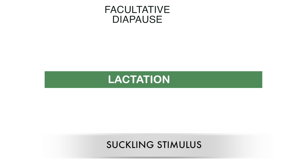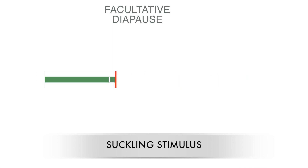Diapause gets initiated in kangaroos because there are two types of lactation: one is high-protein milk with low fat content, and the other is low-protein milk with high fat content. The joey which is in the pouch drinks the high-protein milk, and it is this joey that enables the diapause state for the embryo. So in order to get a high survival rate, kangaroos delay the pregnancy to invest all energy in the already-born joey in the pouch.